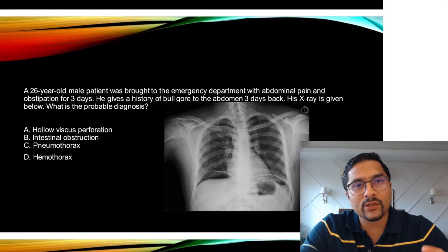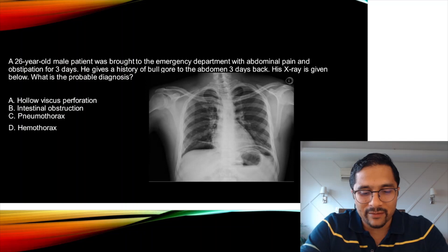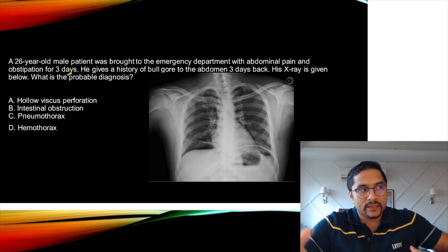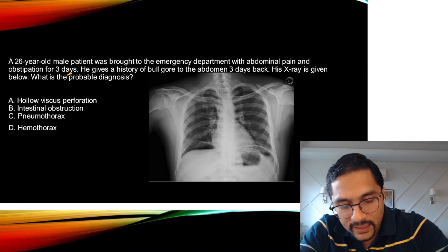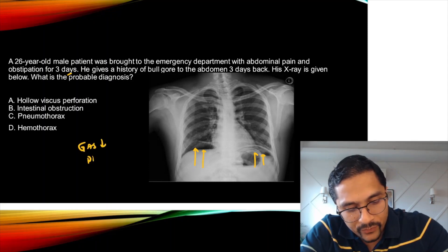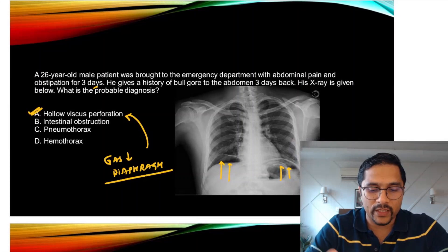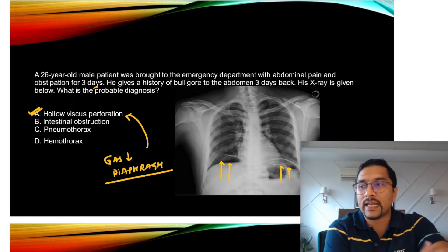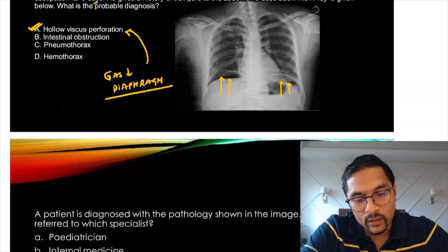A constant question asked every year: gas under the diaphragm. A 26-year-old male comes to the emergency with abdominal pain and obstipation following a bull injury to the abdomen three days back. His X-ray shows gas under the diaphragm, which is a sign of hollow viscus perforation. This is asked every year — a patient who consumed NSAIDs and developed pain abdomen due to a perforated ulcer, or traumatic pneumoperitoneum.